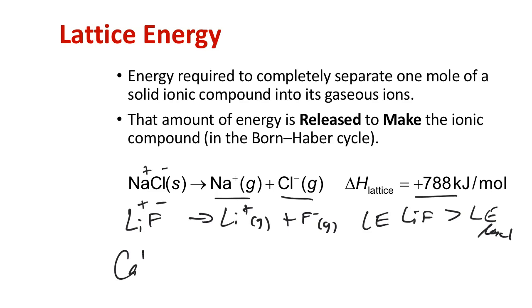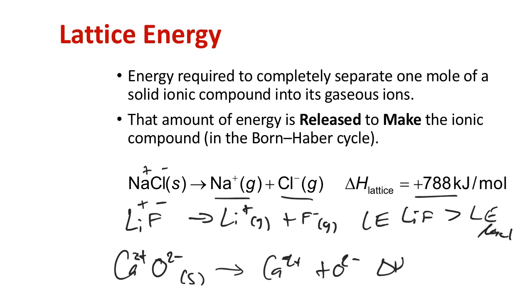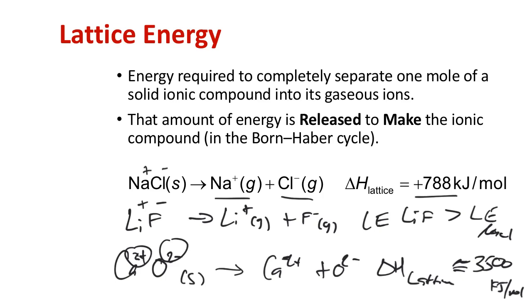Lattice energy is greatly dependent upon the size of the ions, but much more highly dependent on the charges. For +1/-1 ions the range is about 600 to 1,000 kJ per mole. If you double the charge of one ion, you roughly double the lattice energy to about 2,000 kJ per mole. If you double the charge of both ions, you multiply by about a factor of four, reaching 3,000 to 4,000 kJ per mole.